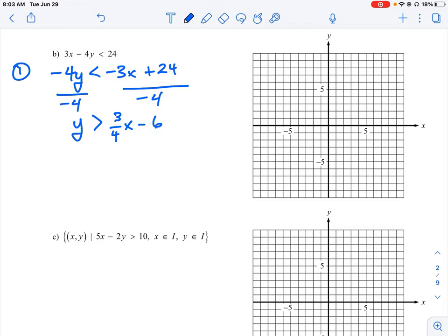So this means our b, which is our y-intercept value, is negative 6, and our slope, which is the rise over run, is 3 over 4. So we can now quickly plot that.